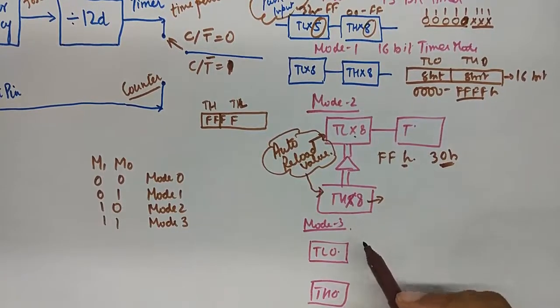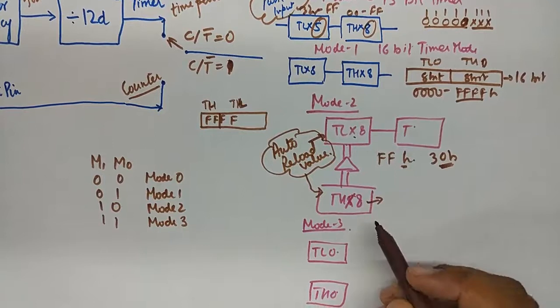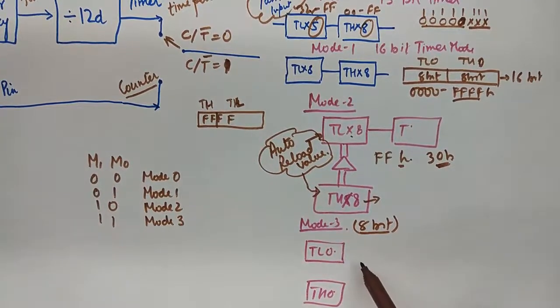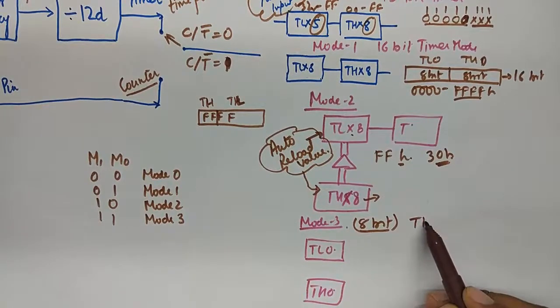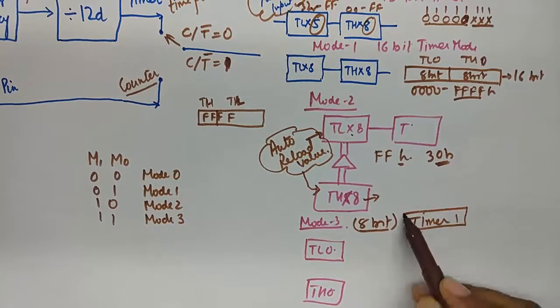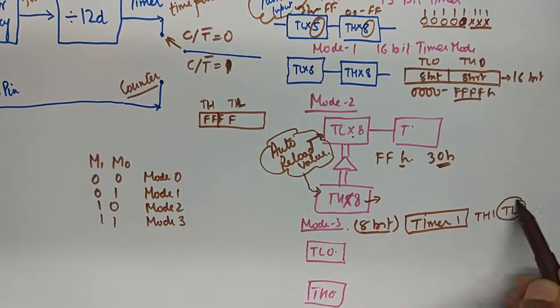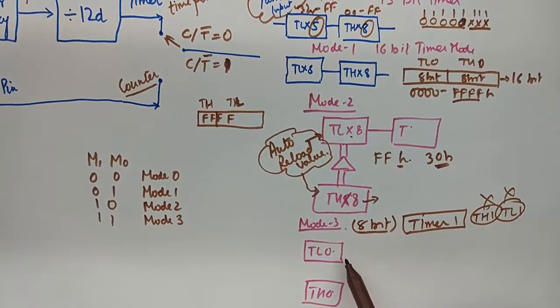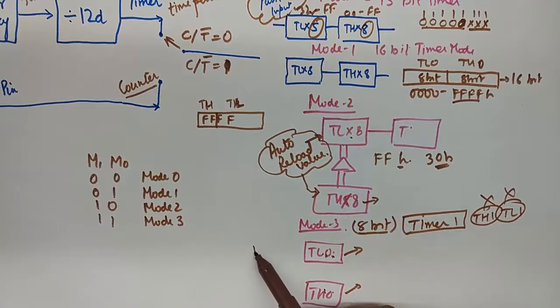And mode 3 is the timer operation in 8-bit mode. In order to use 8-bit timers, we would not use Timer 1. Both the timer 1 timer registers TH1 and TL1 will stay dormant. The 8-bit registers of timer 0, which are TL0 and TH0, will act as two 8-bit timers individually, and their modes can be selected or their controlling can be done through the TMOD register 0 to 3 bits.